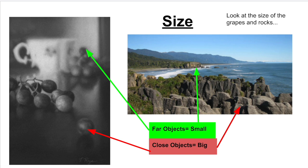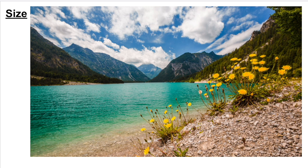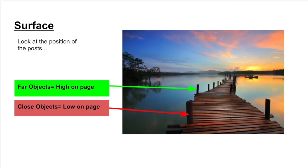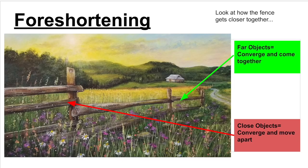We have size, where far objects are smaller and close objects are bigger. Here's another example of this and another in an actual watercolor painting. For surface, look at the position of the posts — far objects are higher on the page and close objects are lower on the page.